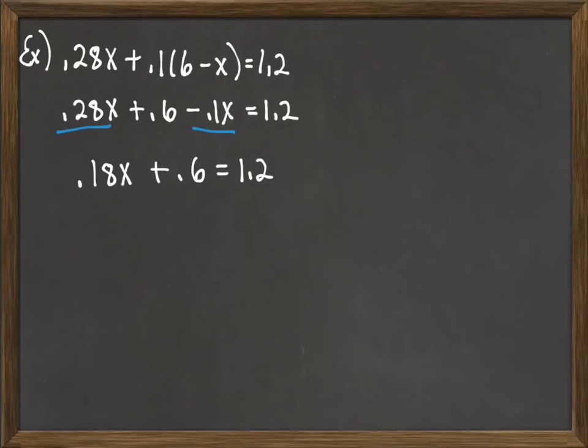Then we continue solving this problem. We want the variable on one side by itself, so we subtract 0.6. Working out the arithmetic, 1.2 minus 0.6 is 0.6. So we get 0.18x equals 0.6.